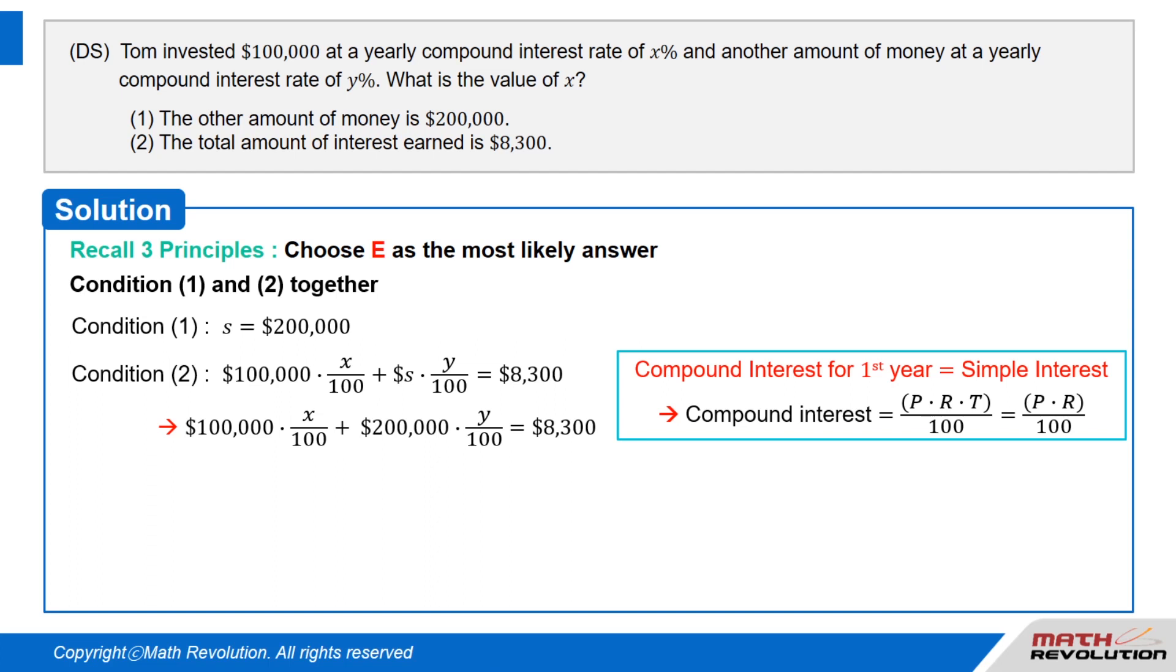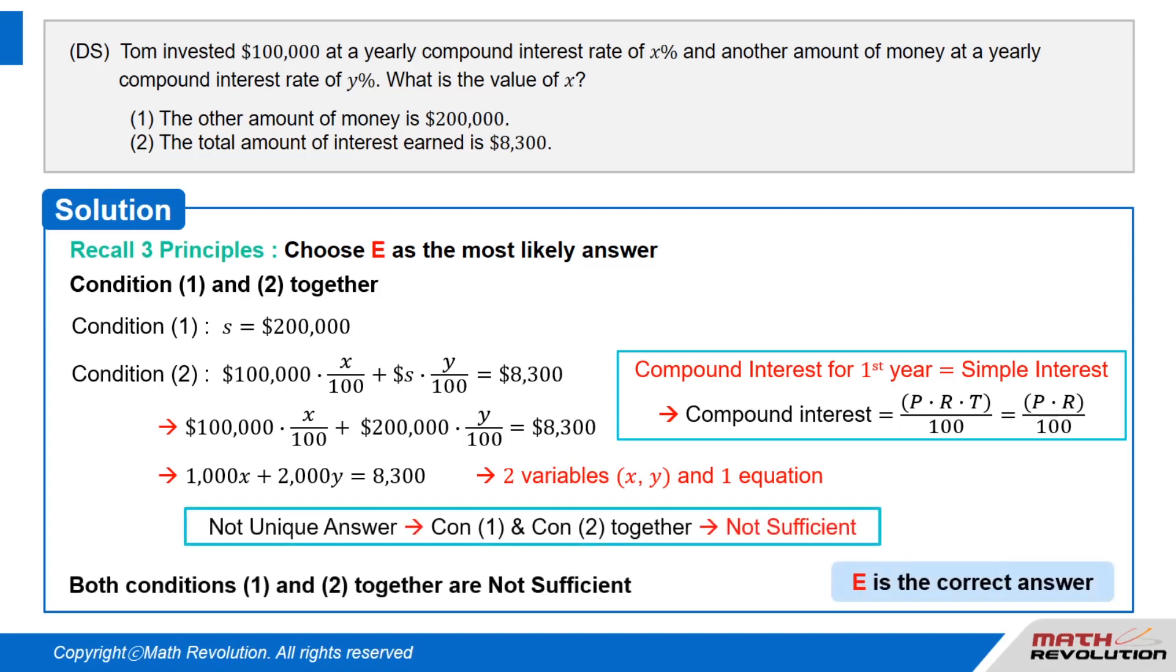Putting the two equations together, we get $100,000 times X over 100 plus $200,000 times Y over 100 equals $8,300. That is, 1000 times X plus 2000 times Y equals $8,300. But we still have two variables and only one equation, so we cannot determine the unique value of X. Consequently, conditions 1 and 2 combined are not sufficient.